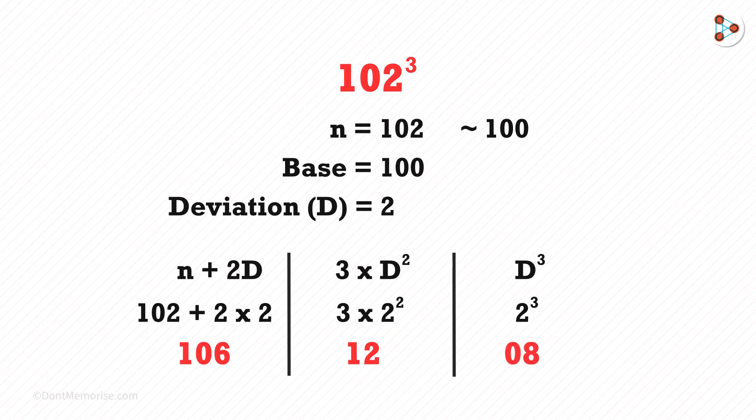One thing you need to remember is the number of digits in the second and the third part will depend on the number of zeros in the base, which is 2 in this case.